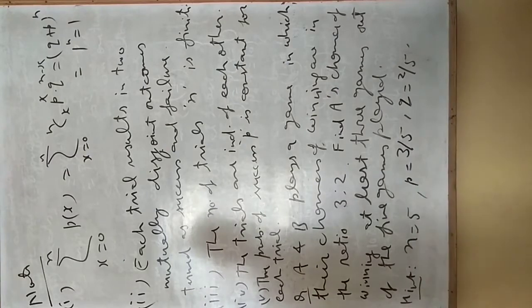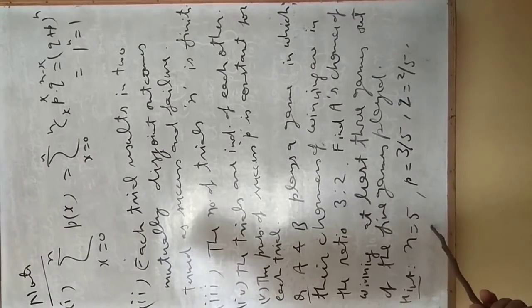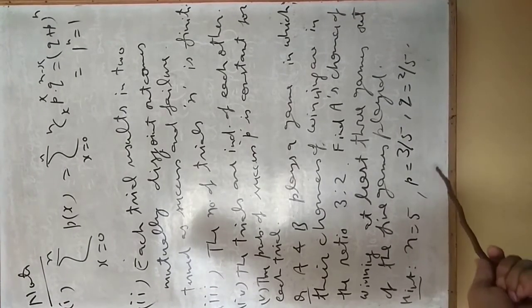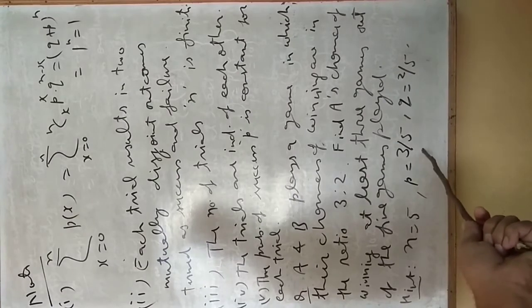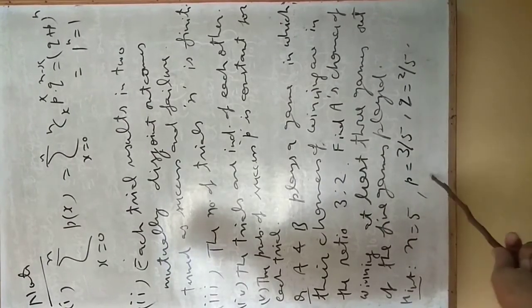Here I am giving one hint: that is, n equals 5, meaning total number of trials is five, with the probability of success or probability of A winning is 3/5, and q will be 2/5.